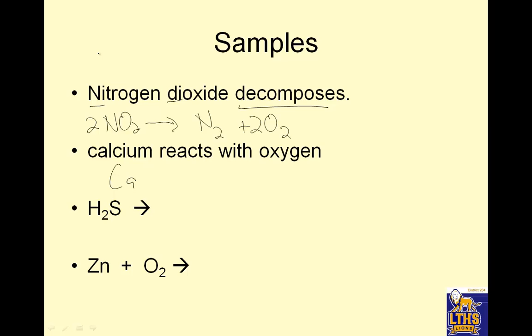Calcium reacts with oxygen. Calcium, Ca, plus oxygen, O. Calcium is not diatomic. Oxygen is diatomic. And that yields CaO. Calcium is plus 2, oxygen is minus 2, so those charges balance. To balance this with these guys, I have 2 oxygens on the left, I need 2 on the right. That gives me 2 calciums.